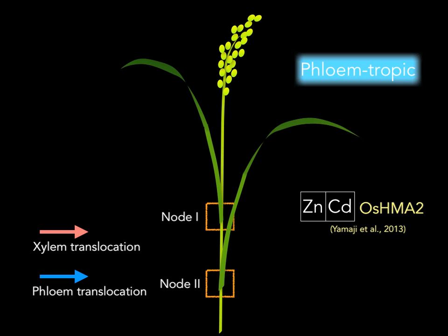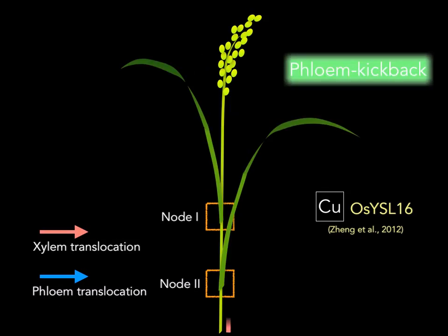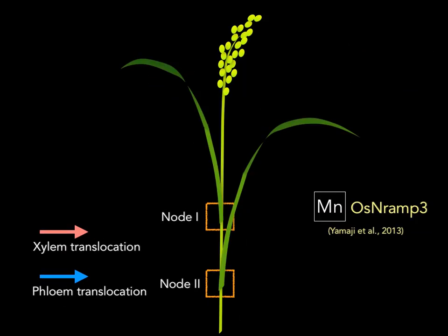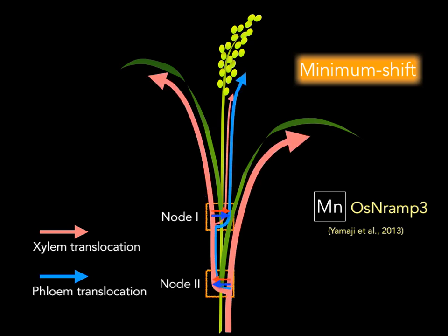The second one is the phloem-tropic mode. This mode refers to preferential distribution of an element exclusively through the phloem. The third one is the phloem kickback mode. In contrast to the phloem-tropic mode, in this mode mineral elements are first distributed to the expanded leaf and then redistributed to the developing tissues through phloem transport. The last one is the mineral shift mode, which refers to switched distribution of a mineral element in response to environmental changes.